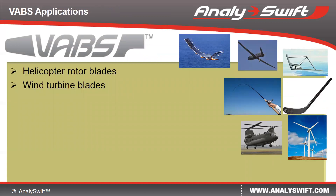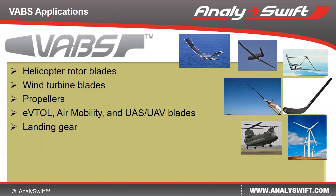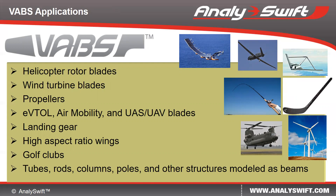Besides helicopter rotor blades and wind turbine blades, which are the two major applications of VIPS, VIPS can also be used to model propellers, eVTOL blades, landing gears, high aspect ratio wings, golf clubs, tubes, rods, columns, poles, and other structures which engineers want to model as beams. As long as you want to model a slender structure as a beam, VIPS can help you get the best inertial properties and structural properties as input for your beam analysis.